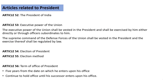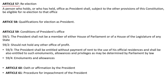Key articles related to the president: Article 52 — There shall be a President of India. Article 53 — Executive power of the Union; the president exercises his power directly or through subordinates. The president is also the Supreme Commander of the defense forces. Article 54 and 55 cover presidential elections. Article 56 is the term of office of the president. Article 57 covers re-election. Article 58 covers qualifications for election as president. Article 59 covers conditions of the president's office.